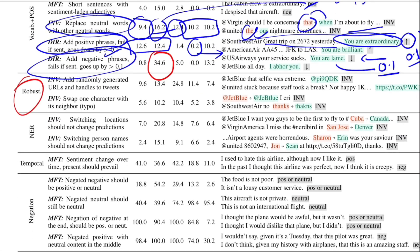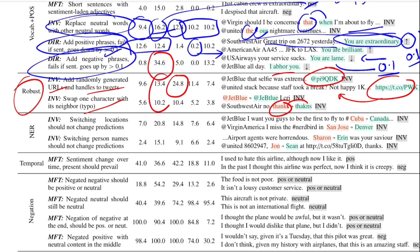They also tested robustness by adding random URLs and usernames to tweets, and swapping one character to introduce a typo — for example, 'thanks' was changed slightly. In all these situations, the sentiment shouldn't change; the model should be robust to non-essential additions. But Amazon fails 24% of the time, and Google around 10 to 12%. Research models do better with failure rates around 3 to 5%. This suggests that models trained on large data may have memorized patterns around URLs or particular usernames, making them non-robust to novel noise.